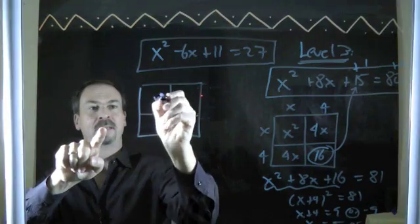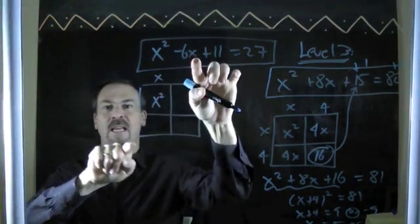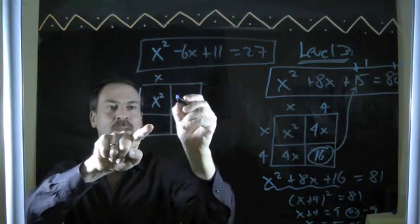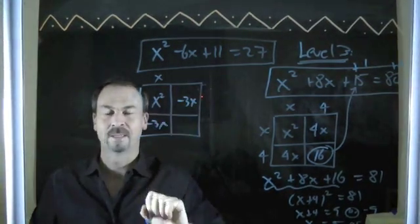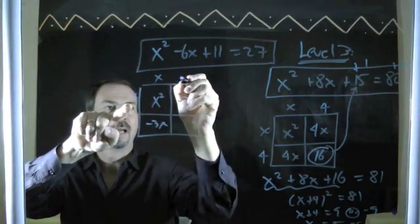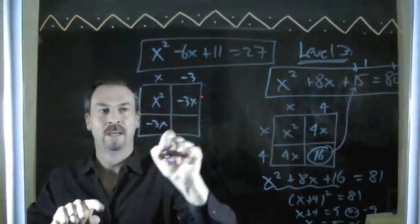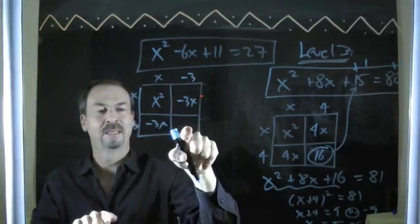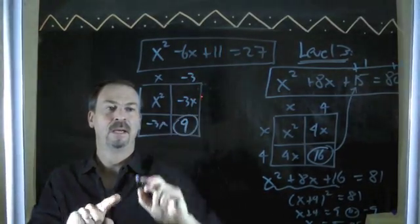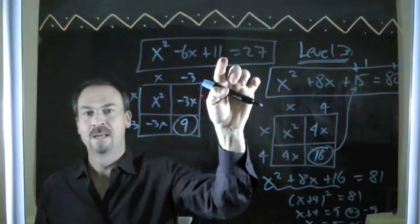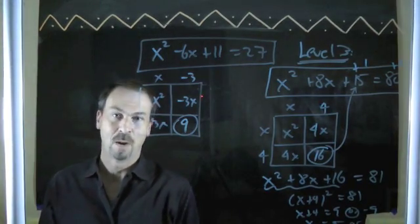x squared piece must come from x times x. Negative 6x. Two pieces are the same. Adding up to negative 6x must be negative 3x and negative 3x. Something times x is negative 3x. Negative 3, negative 3. Negative 3 times negative 3 means this number better be a 9. Trouble is, I don't have a 9. I have an 11.